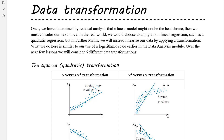If the data is non-linear, it doesn't make sense to model the data with a straight line. At the end of Chapter 4, we looked at the residual analysis and how, by looking at the residual plot, we can determine whether or not a linear model was appropriate for that data set. We talked about what we can do if the linear model is not appropriate — and what we can do is apply a transformation to the data.